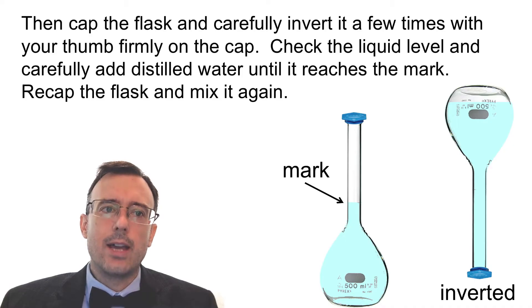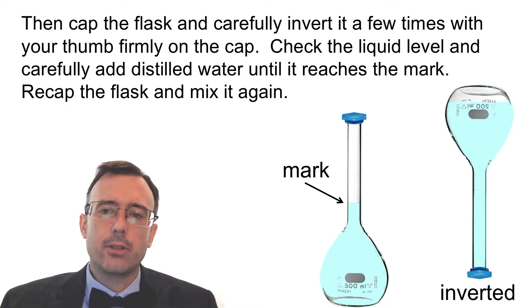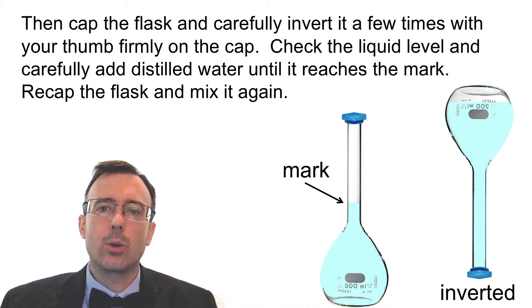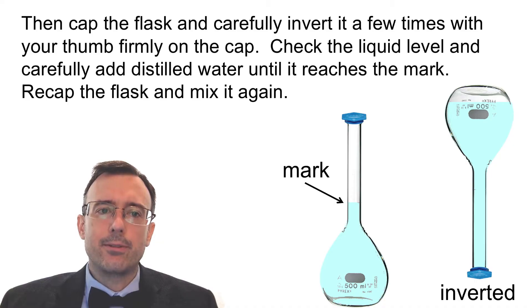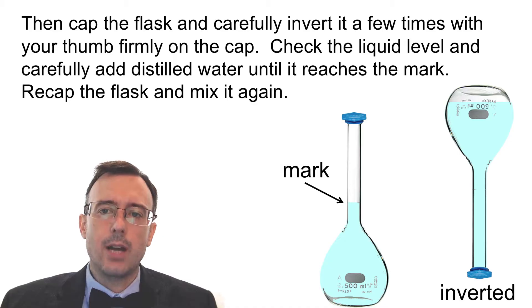Check the liquid level and then carefully add distilled water until it reaches the mark. Every volumetric flask has a mark, and at that mark it means the total volume equals whatever that volumetric flask holds. Then recap the flask and mix it again by inverting it multiple times — simply invert it, don't shake it.